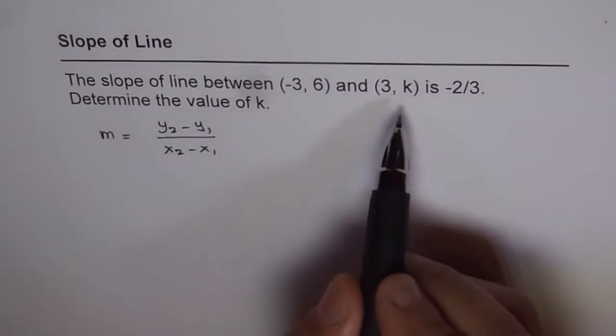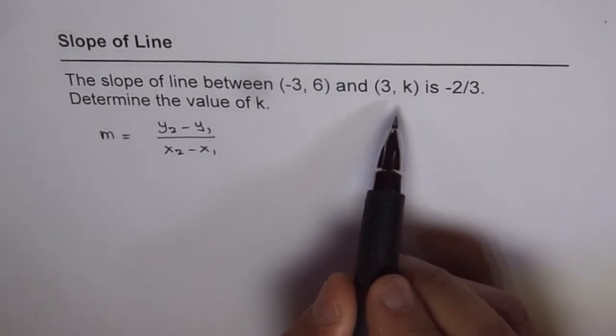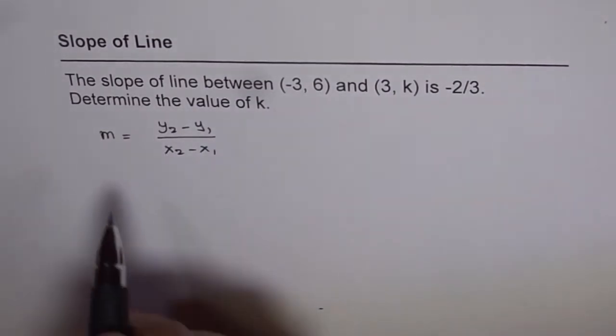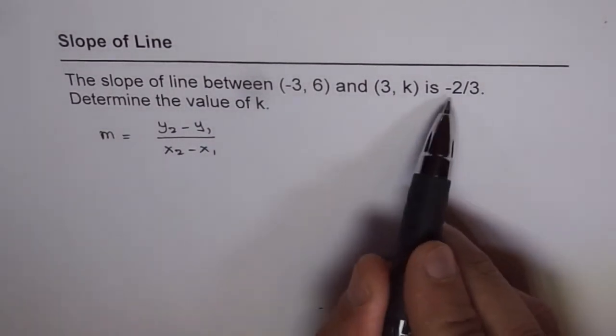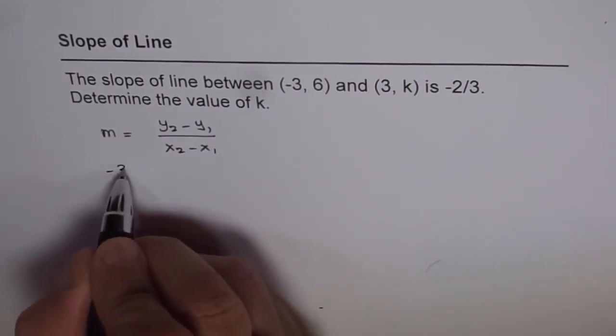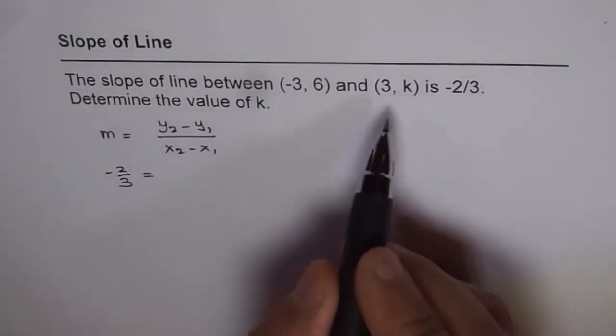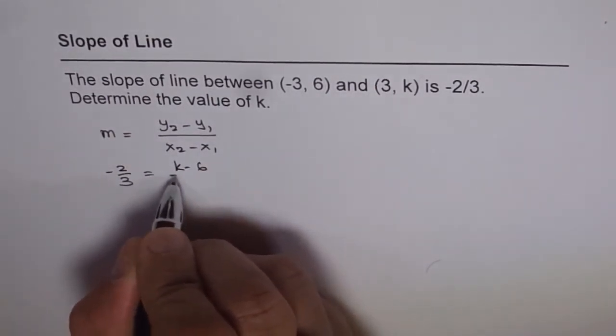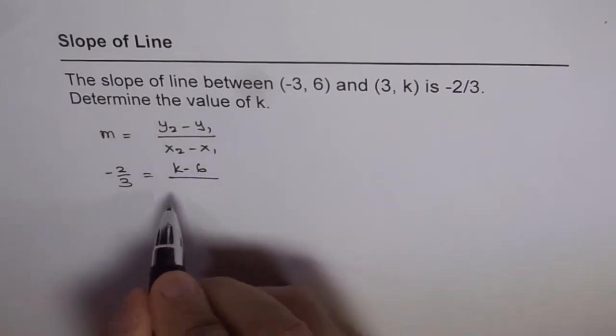But I will prefer to write this point as the second point since we will get k value first. Now here we are given that the slope is -2/3. So we can replace m with -2/3 and write y2 minus y1 that is k minus 6 over 3 minus (-3).